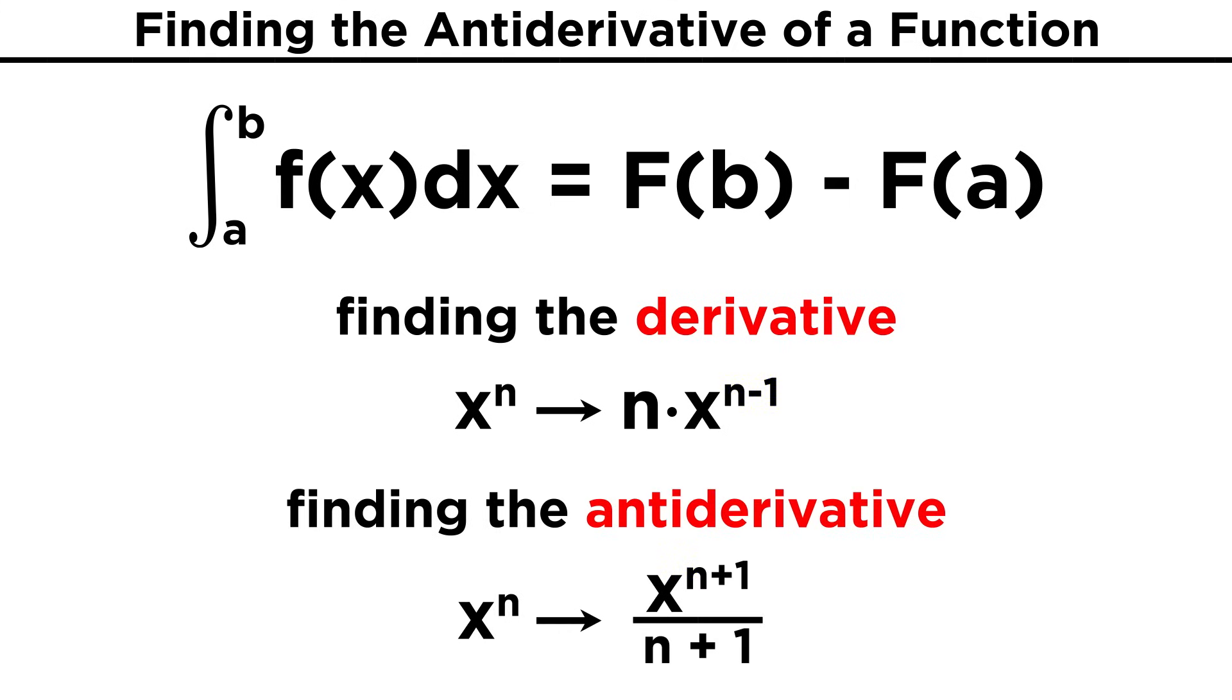That means that to get an antiderivative, we have to increase the exponent by one, and then divide the resulting term by the new exponent. For example, to get the antiderivative of x squared, we must write x cubed over three.